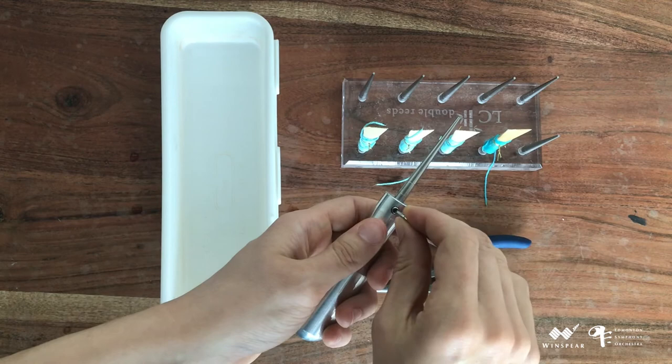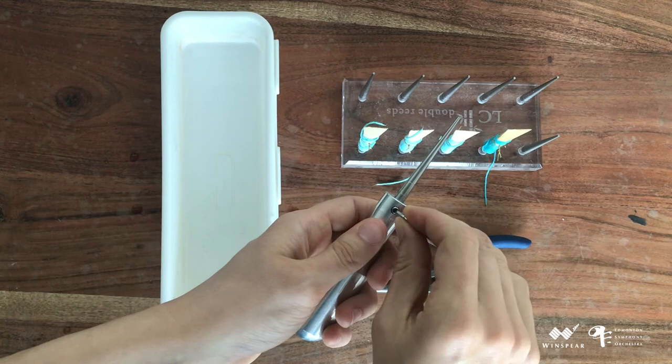It's time to turn a tube into a blank. Ideally, the tubes would sit here for two weeks or longer. I find that a minimum of two days is acceptable, especially in the dry Alberta weather. Tune in next time to learn how to turn a tube into a blank.